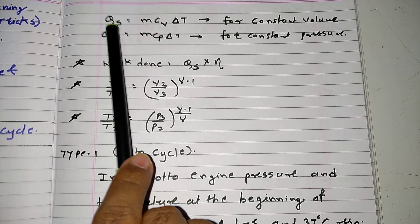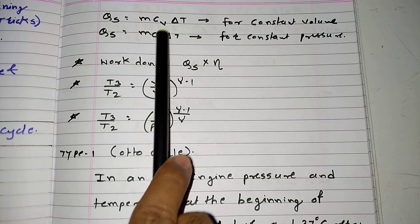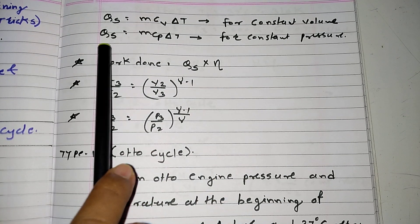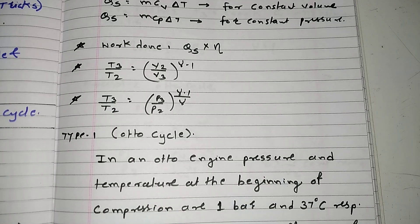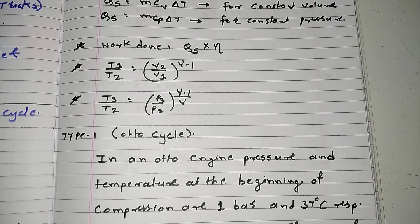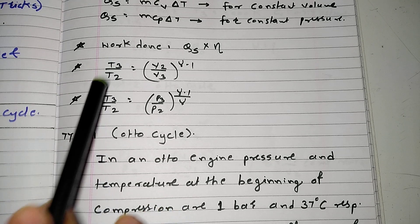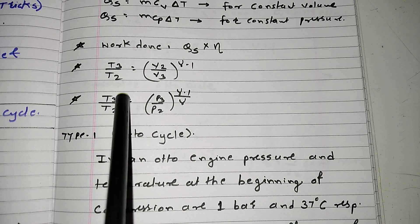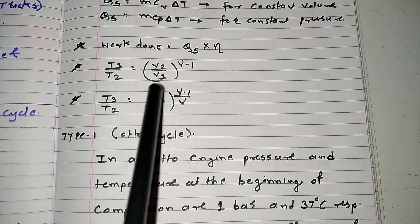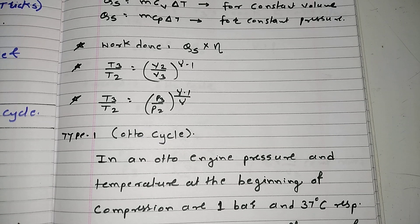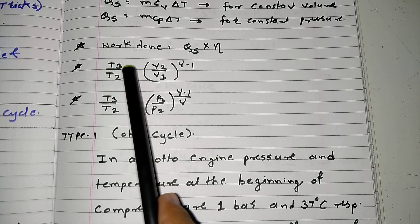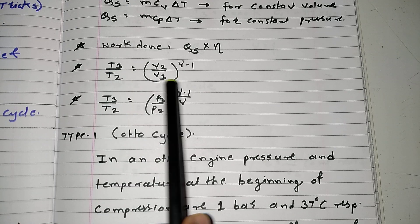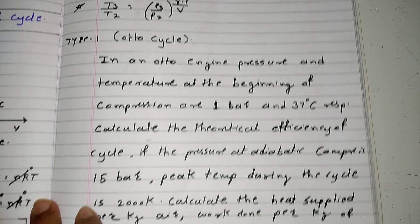To find heat supplied: if constant volume is given, use Q = M × CV × ΔT; if constant pressure is given, use Q = M × CP × ΔT. Work done equals heat supplied times efficiency. If T1 is given and we need to find T3, use the formula T3/T2 = (V2/V3) raised to gamma minus 1, or T3/T2 = (P3/P2) raised to (gamma minus 1)/gamma, depending on which temperatures need to be found.